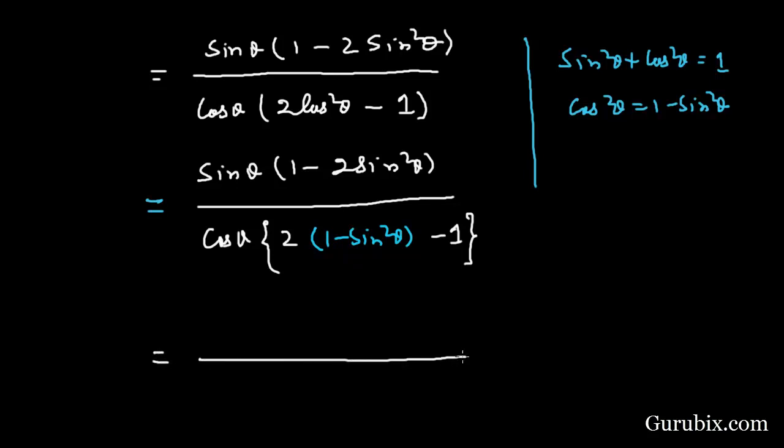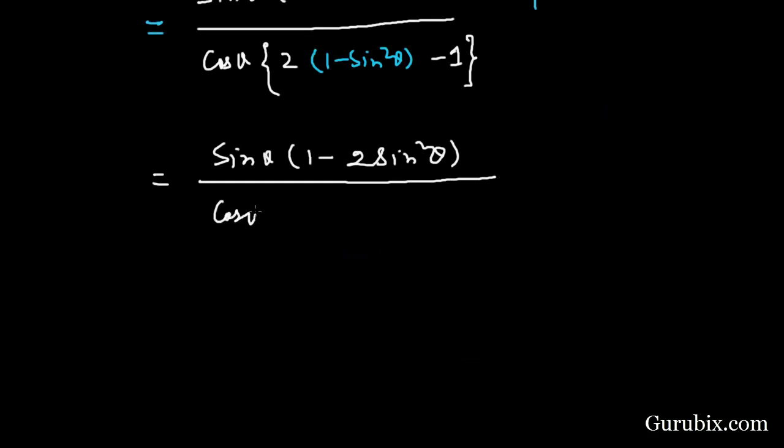This gives us cos θ times (1 - 2sin²θ) minus 1 in the denominator. After simplification, the denominator becomes cos θ times (1 - 2sin²θ).